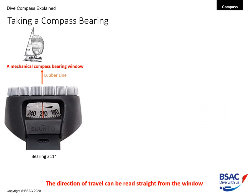Taking a bearing is really simple. All we need to do is raise up our compass and look over the top of the bezel at the object of interest — in this case the bow of a boat. From the window we see that the bearing is 211 degrees. If we were travelling along in our rib and that bearing remained at 211 degrees, we are potentially on a collision course.